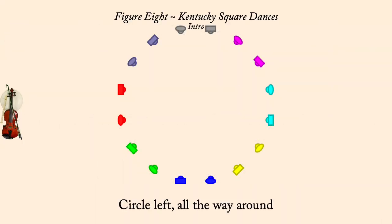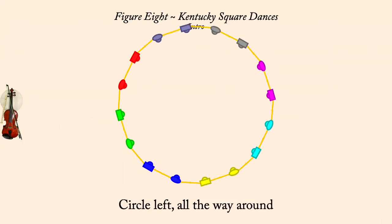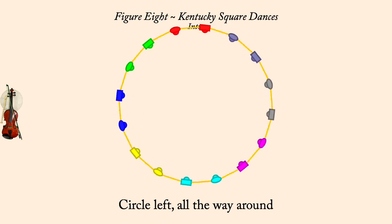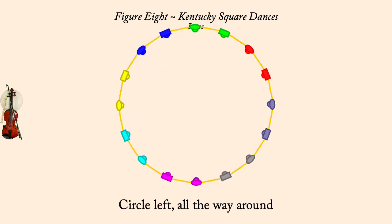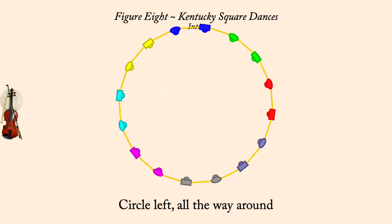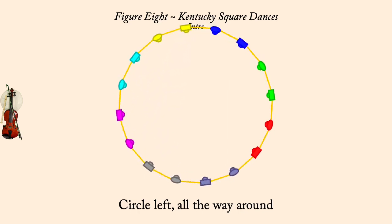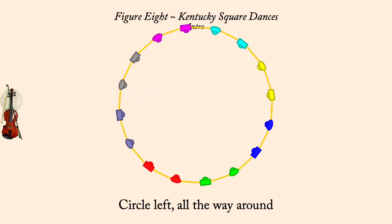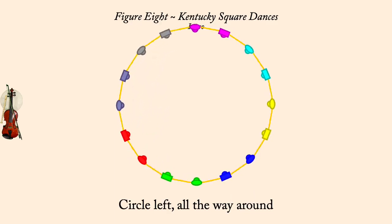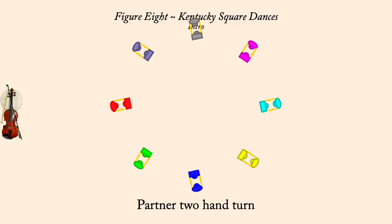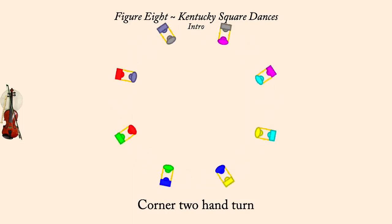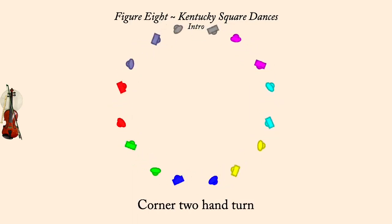Circle left once. Partner two-hand turn. Corner two-hand turn. Partner left-hand turn.